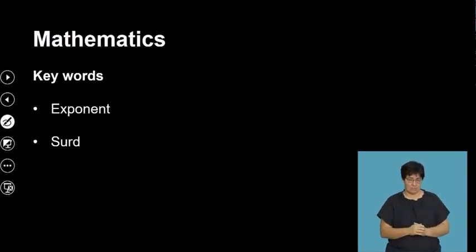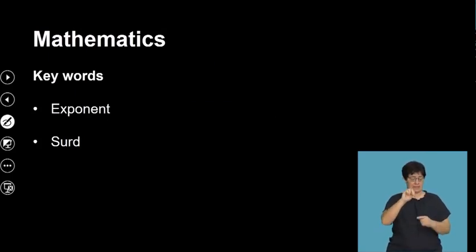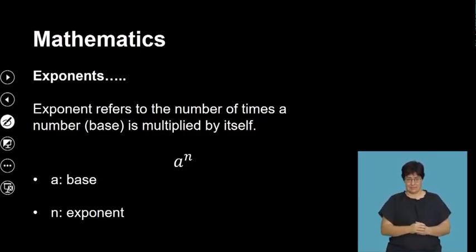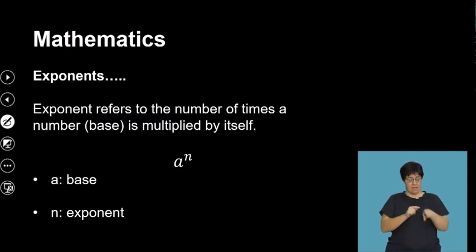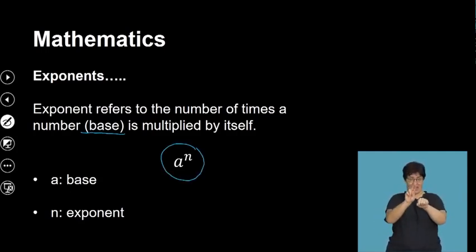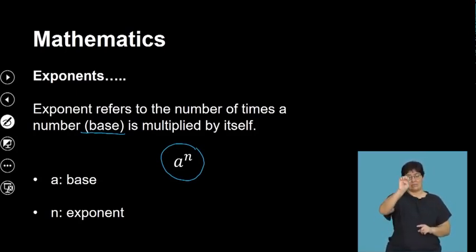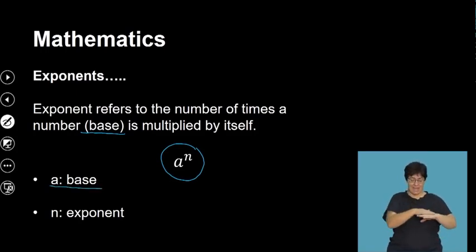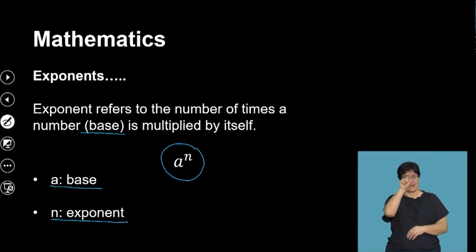The key words for this lesson will be exponent and set. Now, firstly, an exponent refers to the number of times a number — which we call the base — is multiplied by itself. This is written in the form a to the exponent of n, where a is the base and n is the exponent itself.